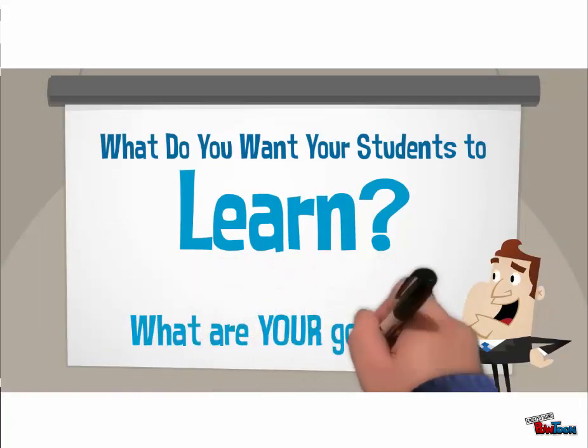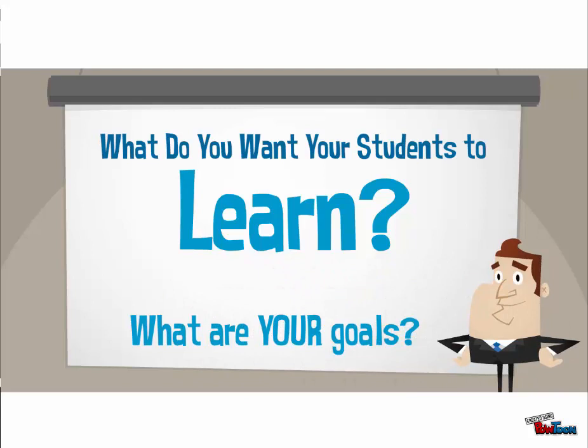Stage 1 includes figuring out what you want your students to learn and setting goals for yourself related to the session. Some of the goals for this session are teaching the basics of adult learning, explaining how to avoid lecturing, and sharing some active learning principles. In a minute we'll talk about setting learning objectives.